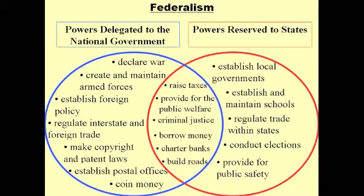When they wrote the Constitution, they set aside delegated powers for the national government — things like declaring war, coining currency — things that only the central government can do. Then there are powers that only the states can do. Then there are other powers that they can share concurrently, things like collecting taxes and passing laws. So the system of federalism gives the central government, which we'll now call a federal government, the ability to have some power and some ability to control the direction of the country.